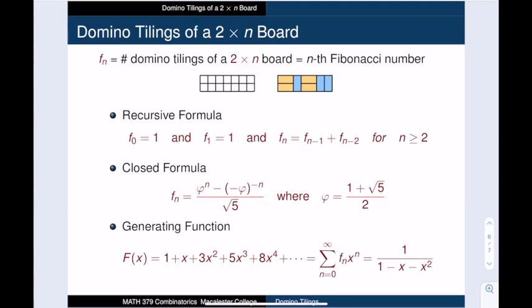In summary, we now have a recursive formula for the number of tilings of a 2×n board. And this is a legitimate answer, but can we do better? In particular, can we find a simple formula for fₙ, the number of tilings of a 2×n board? The answer is yes, and here it is.